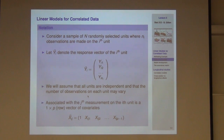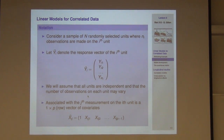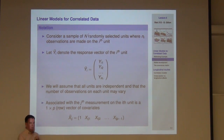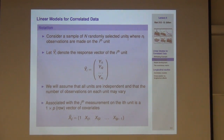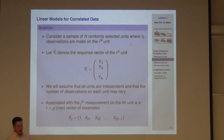Now I'll set the notation for the continuous data portion of the class. I'll let capital N denote the number of sampling units — in the FEV example, that's the number of children, sometimes called clusters since observations are clustered within them. Then little n_i denotes the number of observations made on the i-th sampling unit. For example, for one child, little n_i was equal to 10 — I had 10 repeated FEV measures on that child.